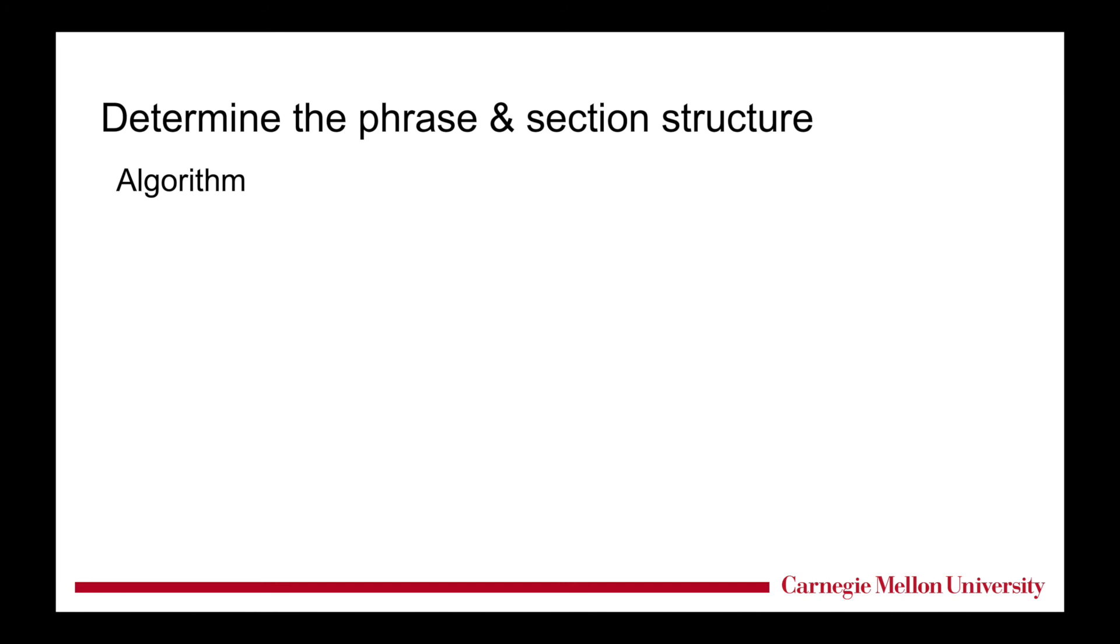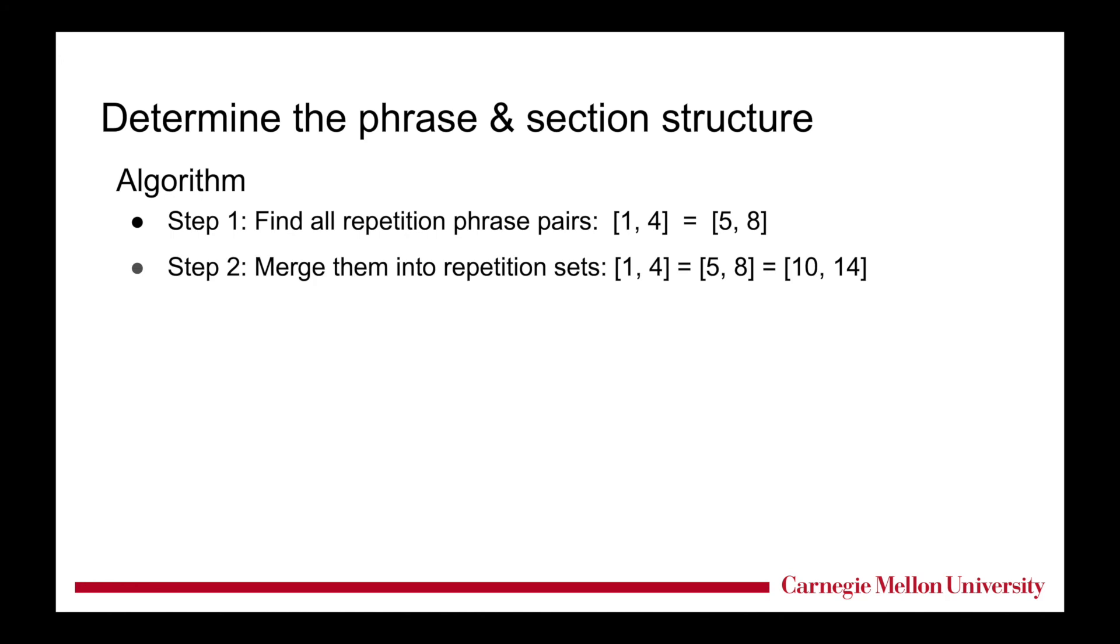Detailed algorithm steps are designed as follows. We first find all repetition phrase pairs using the similarity matrix on previous slides. For example, segment from measure 1 to 4 is a repetition of measure 5 to 8. Then, we merge these repetition pairs into sets that contain multiple repetition phrases. For example, here, these three repeated phrases form a repetition set. Next, we find the best combination of repetition sets that achieve the lowest SDL score using A-star search and dynamic programming.